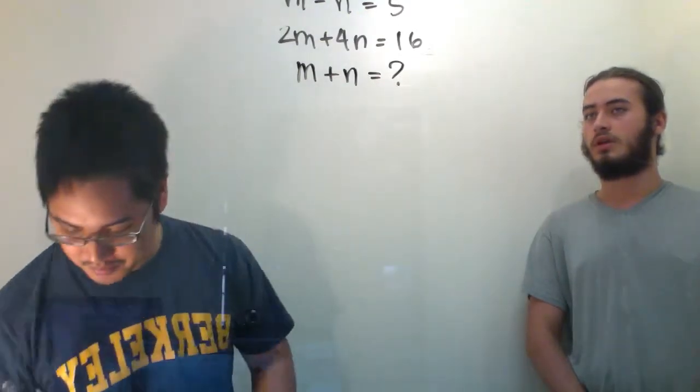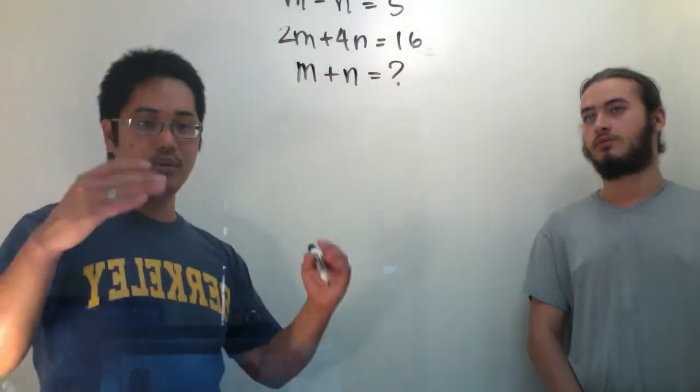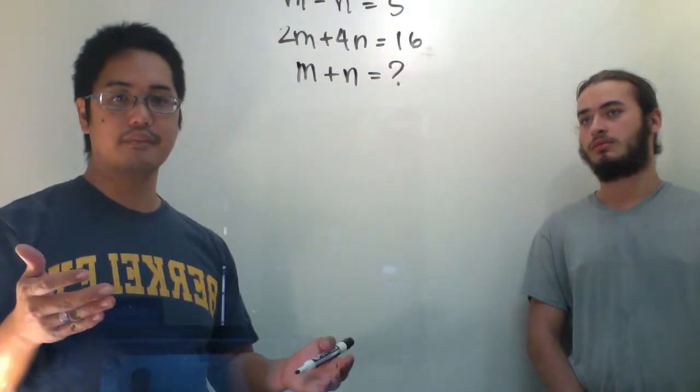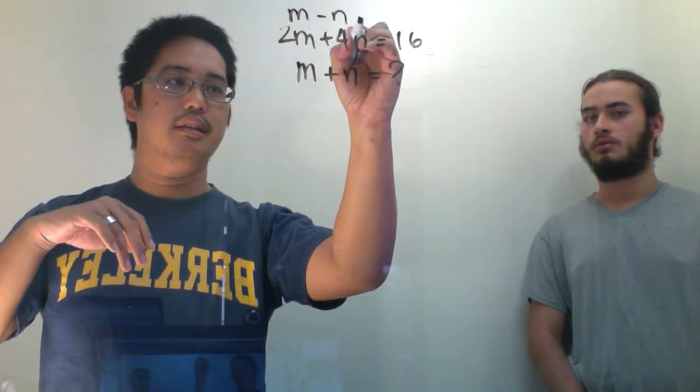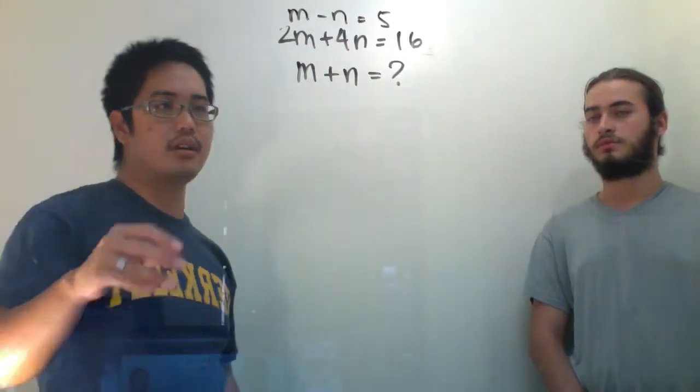Okay? Now, one way you can do it. I'm sorry, this is too high. You can't even see that. m minus n equals 5. So that's the first equation.